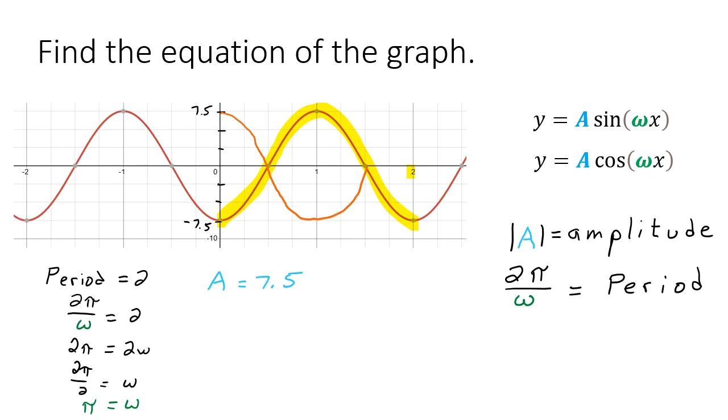bottom out, go through the x-axis and then top out here. So this again is reflected over the x-axis. So we need to introduce a negative for our amplitude there. So our amplitude is or our a value I should say is negative 7.5.